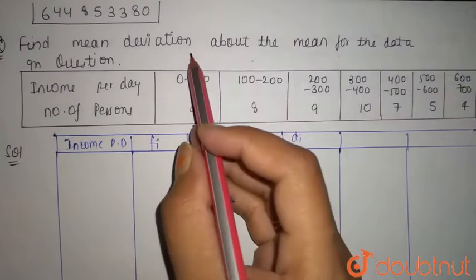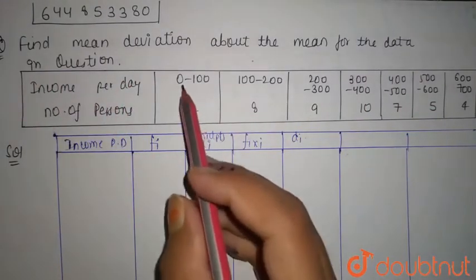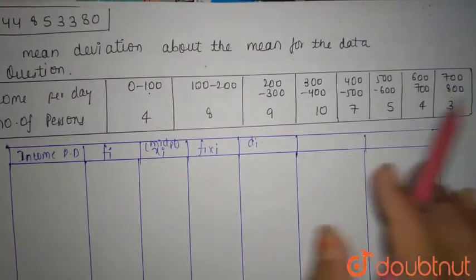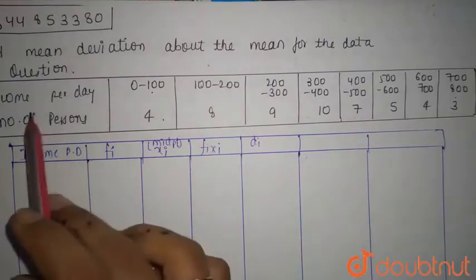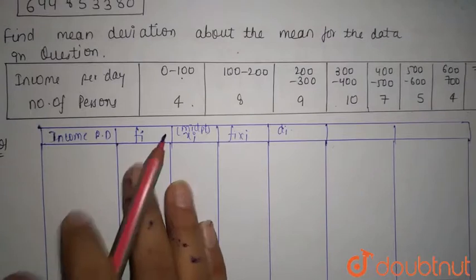Find mean deviation about the mean for the data in the question. We have given the data: income per day, 0 to 100, 100 to 200, and so on up to 700 to 800, and number of persons 4, 8, 9, 10, 7, 5, 4, 3 according to income per day.